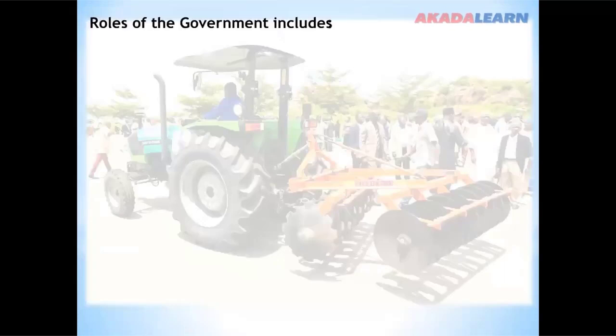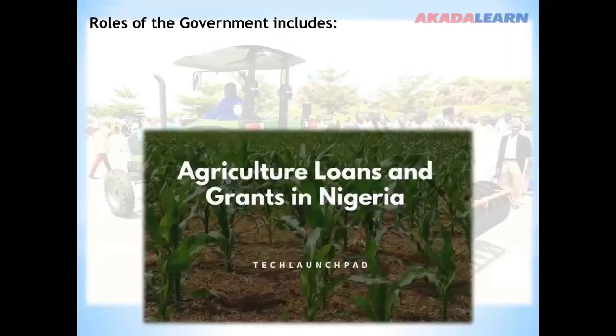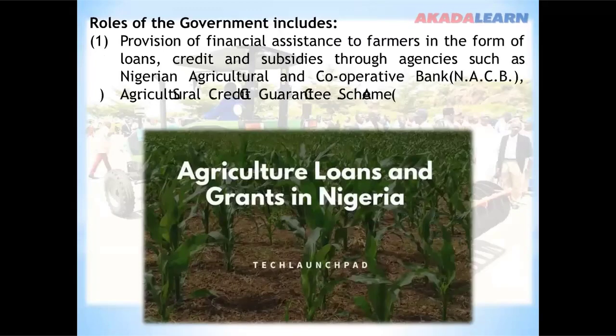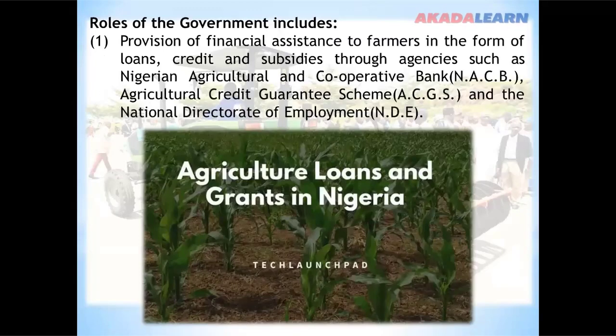What are these roles of government in agricultural development? Number one: provision of financial assistance to farmers in the form of loans, credits, and subsidies through agencies such as Nigeria Agricultural and Cooperative Bank, Agricultural Credit Guarantee Scheme, and National Directorate of Employment.